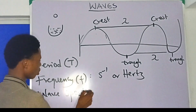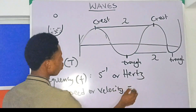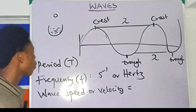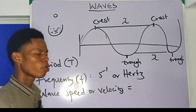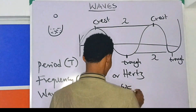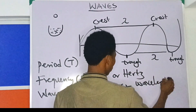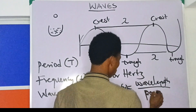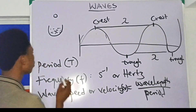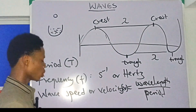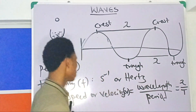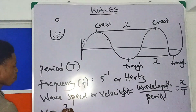The next thing is wave speed or velocity. All these things are necessary background before we go deeply into stationary waves. In physics, speed is distance over time, and velocity is displacement over time. So wave speed, given as v, is wavelength over period. Velocity of a wave is wavelength over period: v = λ/T.